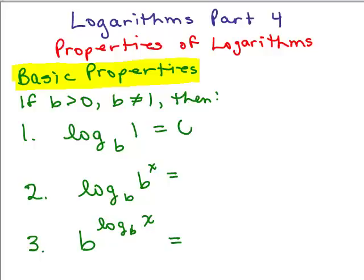Did you get it? Zero. Why? Because that should make sense to you, b to the zero equals one. If you change this to an exponential form, it should make sense why that would be zero. All right, let's do the next one.